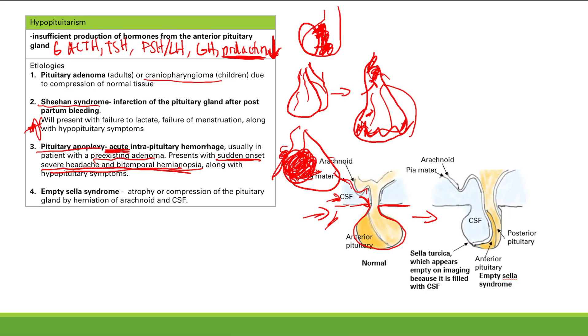You get herniation of the arachnoid. Herniation of the CSF. And what's going to happen? Your anterior pituitary is going to be compressed here. It's not going to work very well, as you can see, as you can imagine.